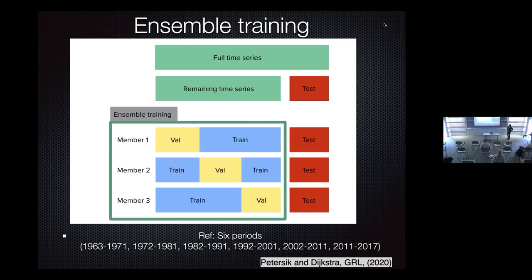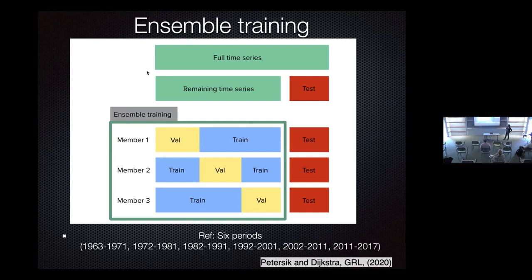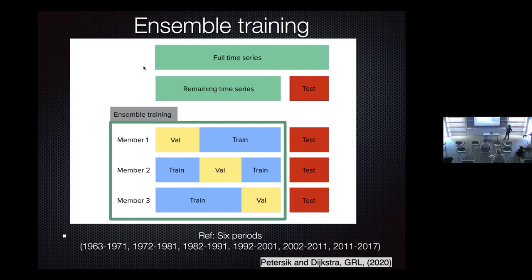Another question was about the reference period for computing anomalies — that can affect which ensemble members perform better. The suggestion was to check whether the reference period for the temperature anomaly time series overlapped with any of the training members and if that correlated with better performance. The speaker agreed to discuss these details in person at Santa Barbara.